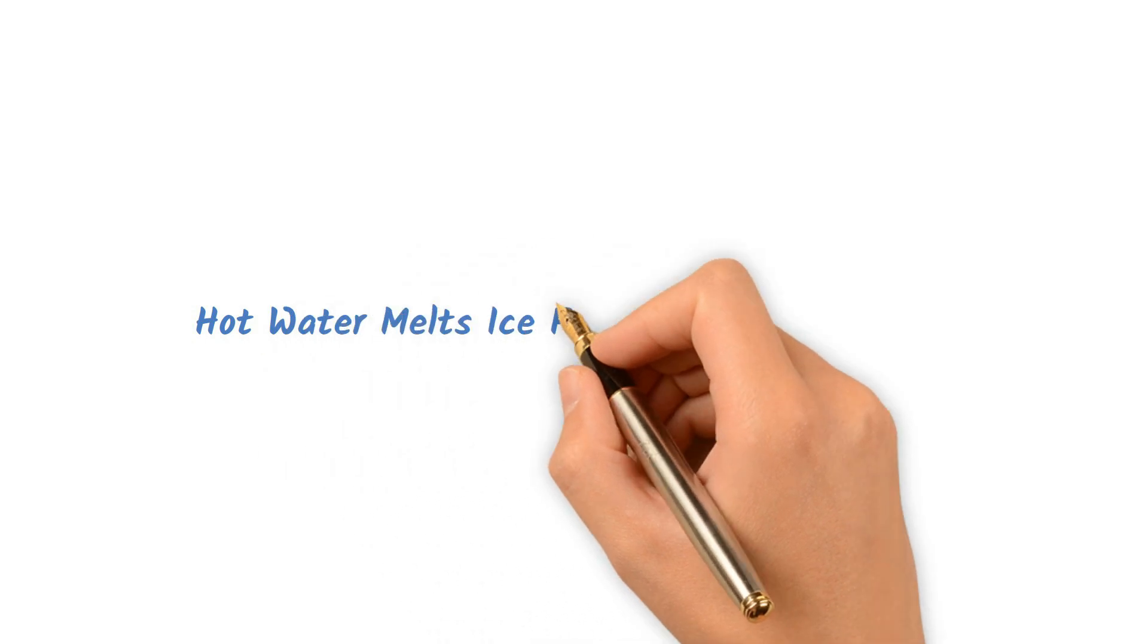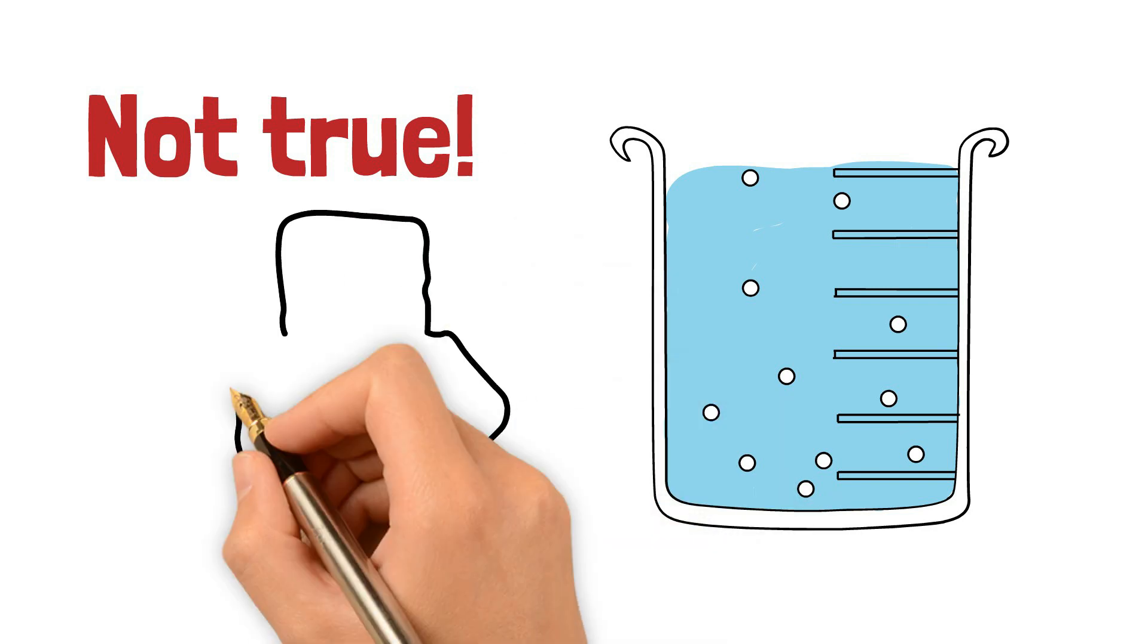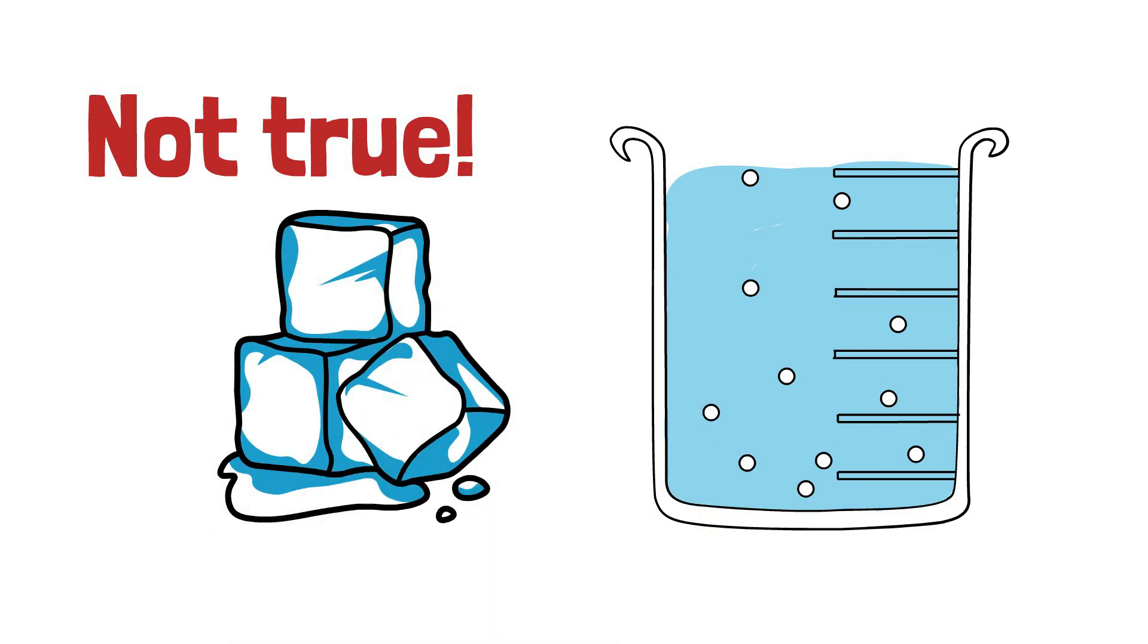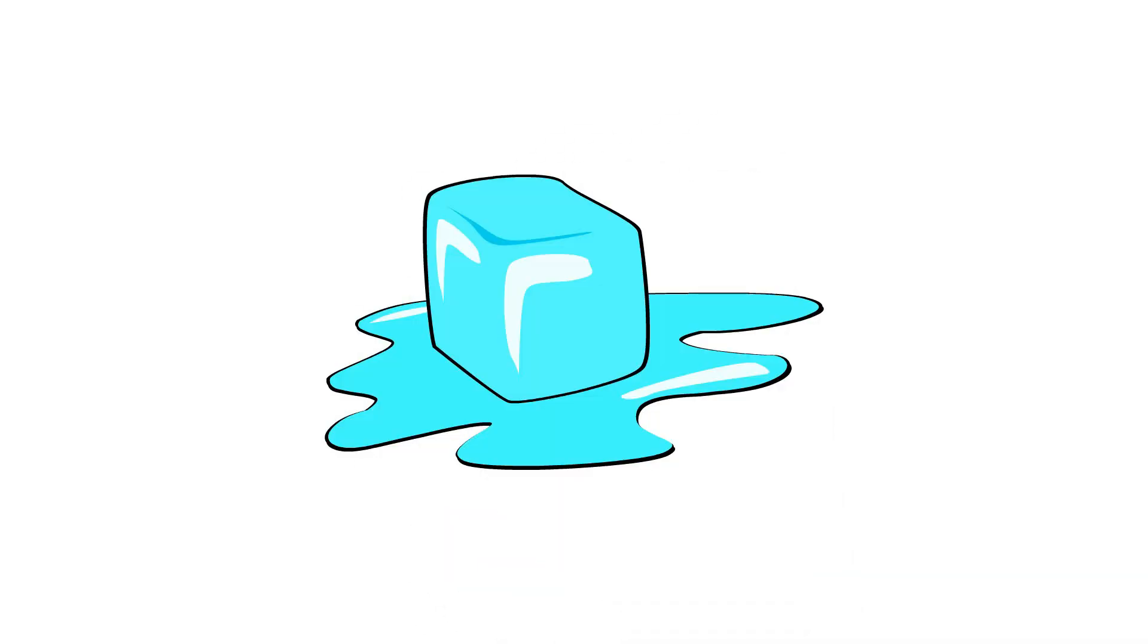Hot water melts ice faster than cold water. Not true, warmer water transfers heat to the ice faster, melting it quicker than cold water. The higher the temperature difference between the water and the ice, the faster the heat transfer and melting process.